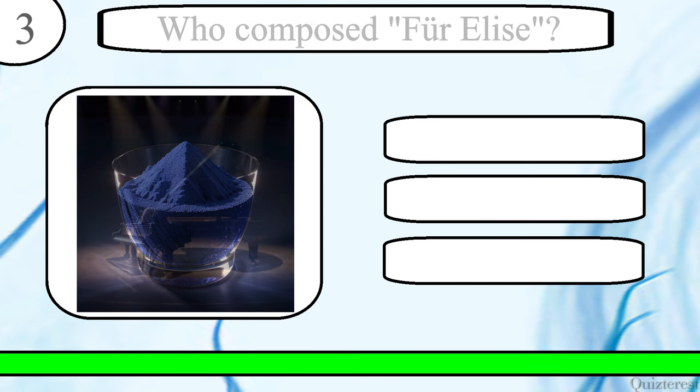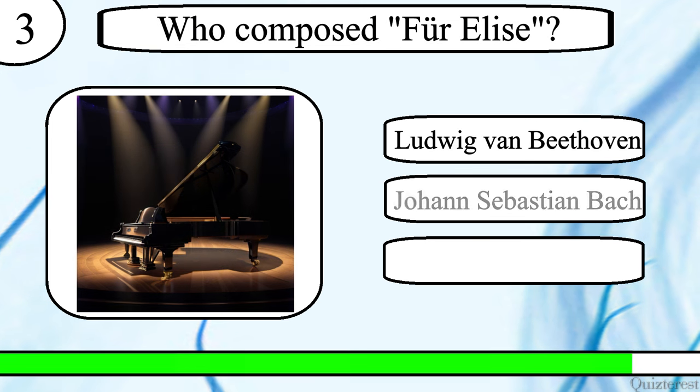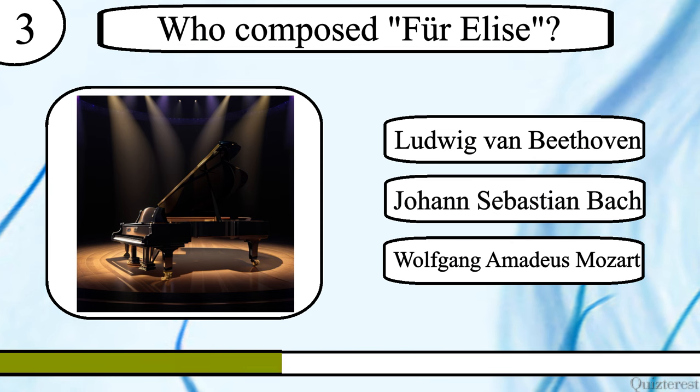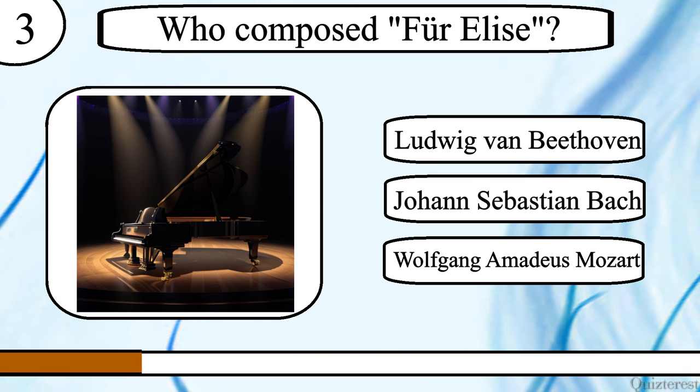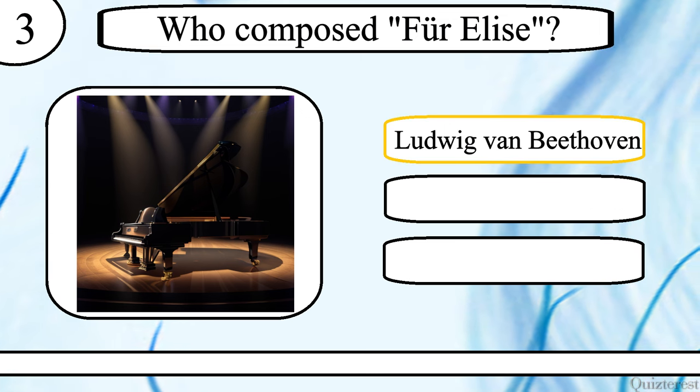Question 3. Who composed Für Elise? Ludwig van Beethoven, Johann Sebastian Bach or Wolfgang Amadeus Mozart? The correct answer is Ludwig van Beethoven.